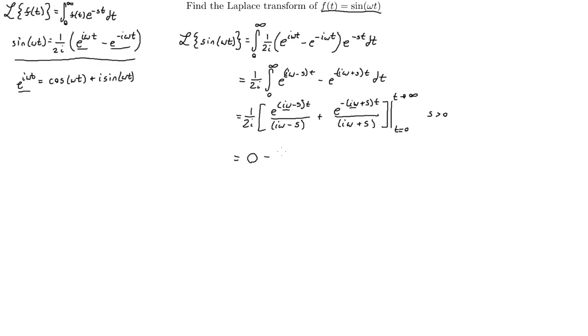So our first term is going to be 0. So then we're going to have minus 1 over 2i, and then we're going to plug in t is equal to 0. Well, the exponential in each case is just going to be 1. So we're going to have 1 over i omega minus s plus 1 over i omega plus s, right?